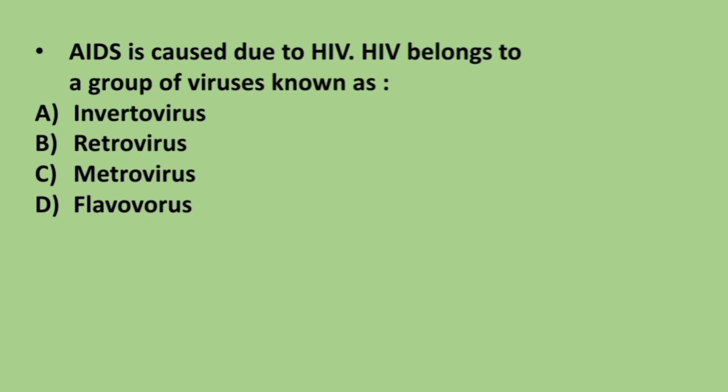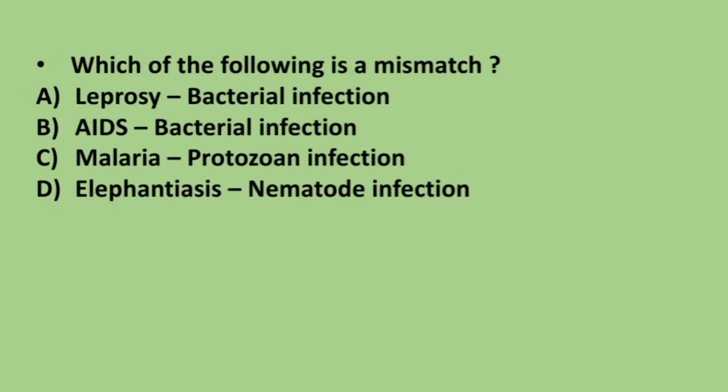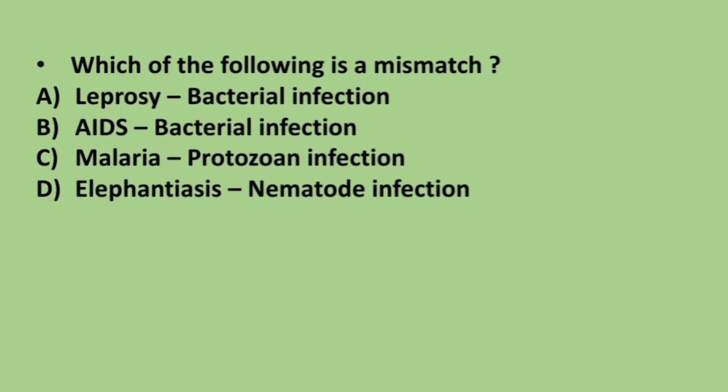AIDS is caused due to HIV. HIV belongs to a group of viruses known as — in vitro virus, retro virus, metro virus, or flavovirus. The correct answer is option B, retrovirus. Next question: which of the following is a mismatch — leprosy by bacterial infection, AIDS by bacterial infection, malaria by protozoan infection, elephantiasis by nematode infection? The correct answer is option B, AIDS by bacterial infection, because AIDS is caused by retroviruses.